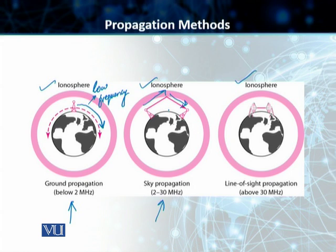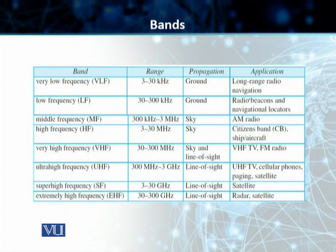The last propagation method is line of sight propagation, used for high frequency transmission. In this case, there needs to be a direct line of sight between the two antennas when they are transmitting electromagnetic signals to each other.